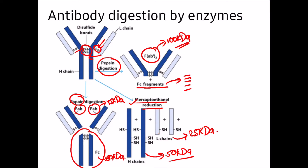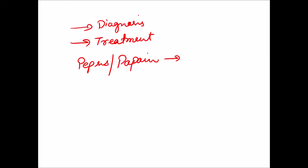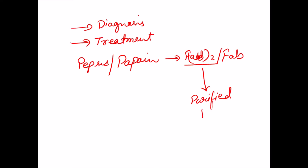The application of these Fab and F(ab')2 fragments is that they can be used for disease diagnosis or disease treatment. After papain or pepsin digestion you recover Fab or F(ab')2 fragments based on the enzyme used. These fragments are then purified by protein A affinity chromatography.